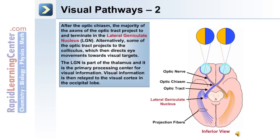After the optic chiasm, the majority of axons of the optic tract project to and terminate in the lateral geniculate nucleus. Alternatively, some of the optic tract projects to the colliculus, which directs eye movements towards visual targets. The lateral geniculate nucleus is part of the thalamus and is a primary processing center for visual information, which is then relayed to the visual cortex in the occipital lobe of the brain.